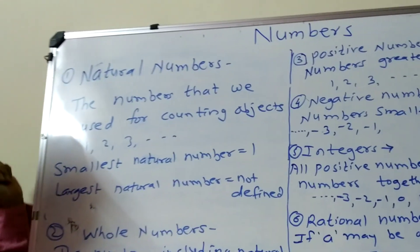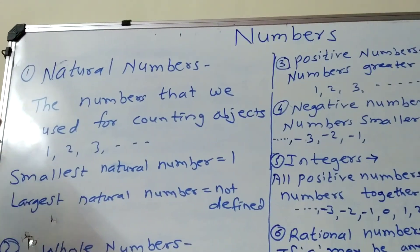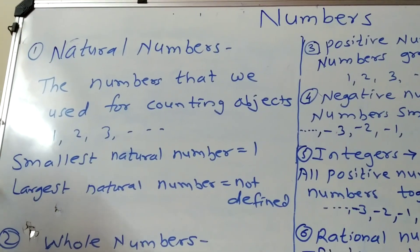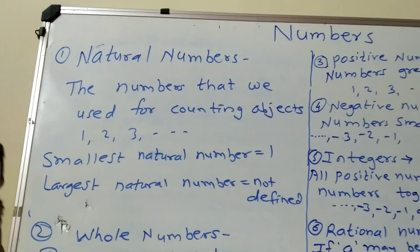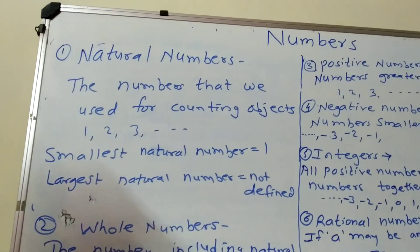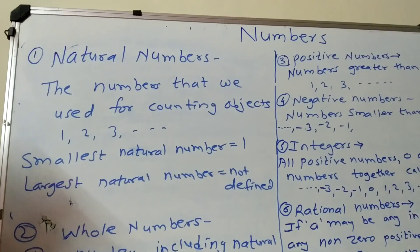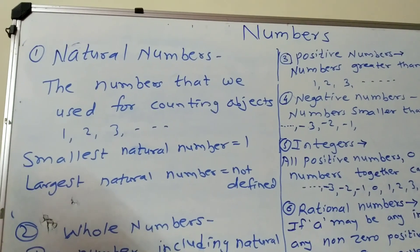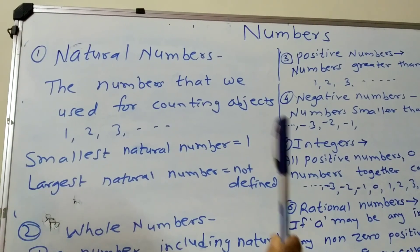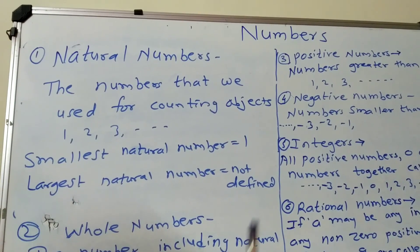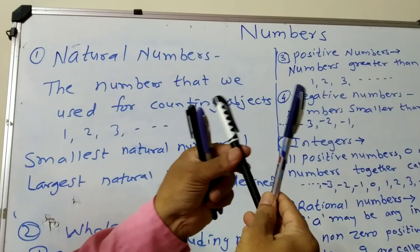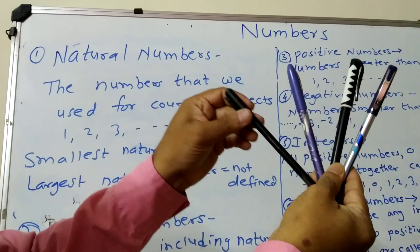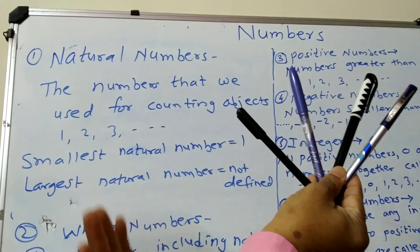First is natural numbers. The numbers that we use for counting objects are called natural numbers. Any object we take, we count it as 1, 2, 3. Suppose I take a pen as an object — this is one pen, these are two pens, these are three pens, these are four pens.